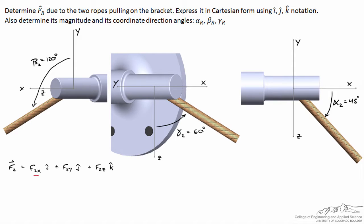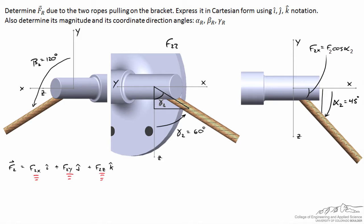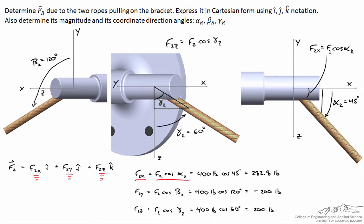The reason we care about alpha two is that we're trying to break F2 into its component forms: the scalars F2x, F2y, and F2z. For example, knowing alpha two equals 45 degrees, F2x equals F2 times cosine of 45 degrees, which is 400 times cosine 45. Similarly, F2z equals F2 times cosine of gamma two, or 400 times cosine 60.